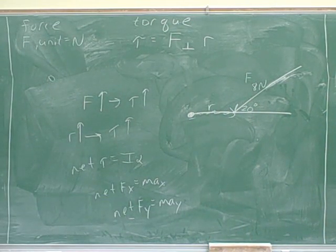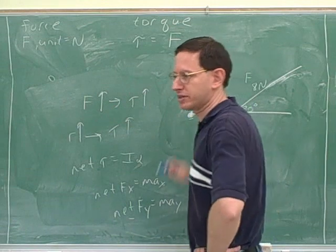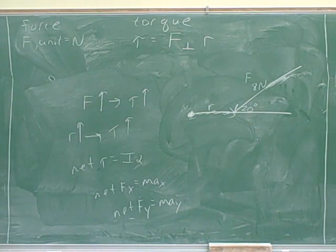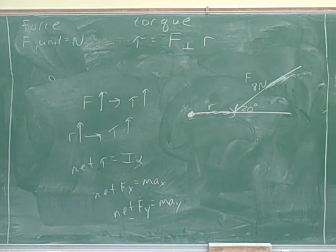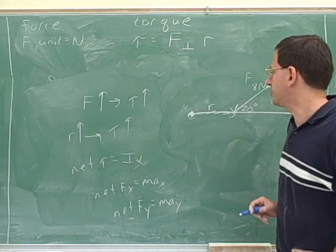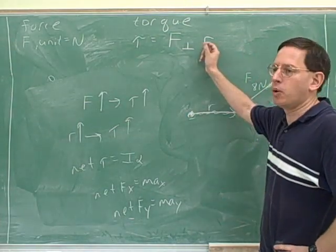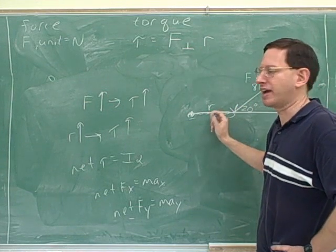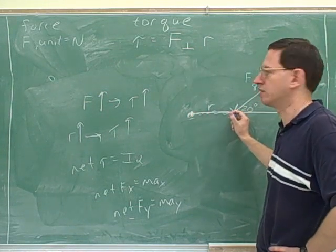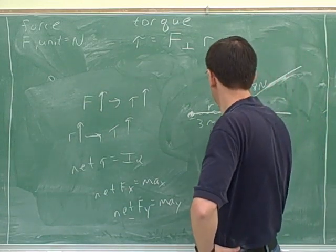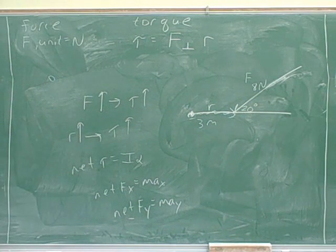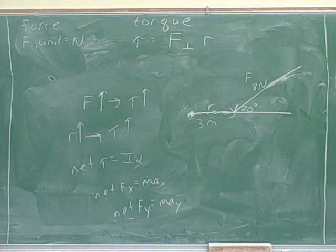We'll use the F-perpendicular method. Step two: draw the axis of rotation or the pivot point — in this case we've labeled that already. Step three: draw R from the axis of rotation to the point of application. Students tend to get lazy and skip this step, not realizing that R is a whole vector. It's a really good idea to actually draw the R vector from the axis of rotation to the point of application of the force, and you need to state how long it is — let's say three meters. That's the kind of number you would be given in the problem.